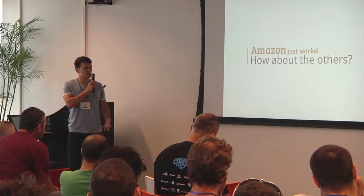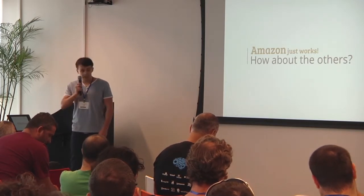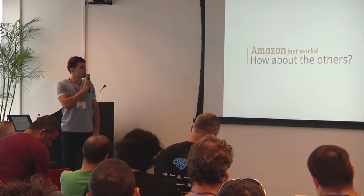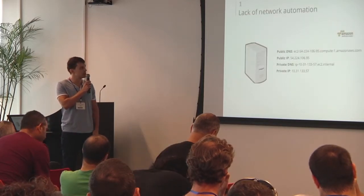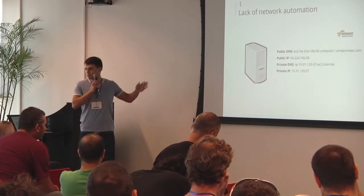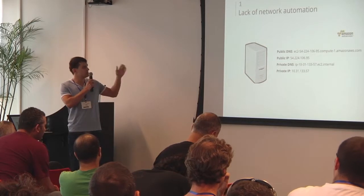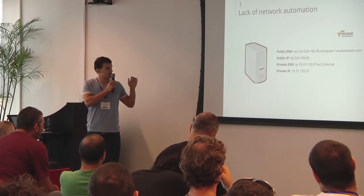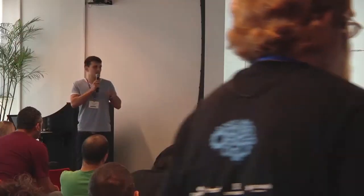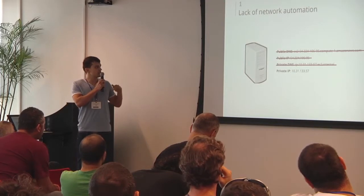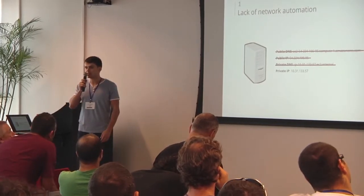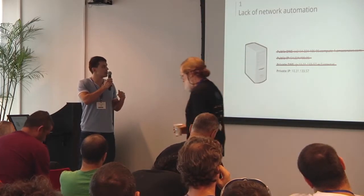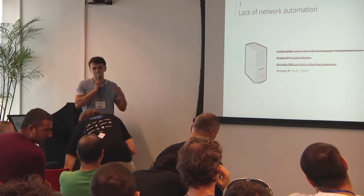The first thing we noticed is the lack of network automation. When you request a new instance from Amazon, you get everything configured for you — from DNS to all the networking. This is something that's not available on the other cloud providers we worked with, to varying degrees. You'll probably need to take care of DNS yourself and add an additional provisioning step to, for example, attach a public IP. This introduced some issues for us with our Puppet configuration.